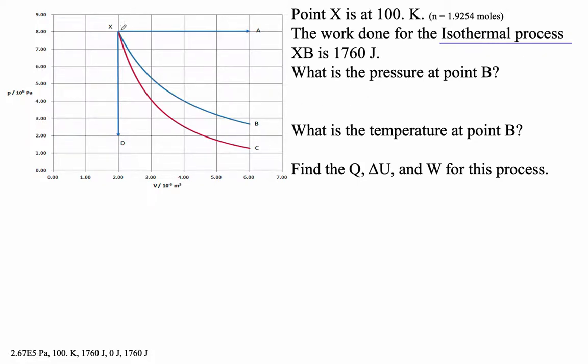Now, convince yourself it is isothermal. Look how it starts here. When the volume has been doubled, it goes from 2 to 4. Notice that the pressure has dropped by a factor of 2. Isothermal means PV equals PV.